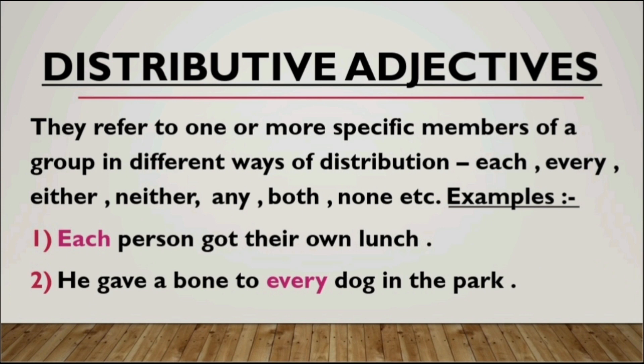Distributive adjectives refer to one or more specific members of a group in different ways of distribution. Basically, an adjective describes a noun or a pronoun. In a distributive adjective, it is referred to a specific member of a noun, and it specifies distribution — it talks about a particular noun in distribution and mentions each category of noun in that sentence, distributing individually.